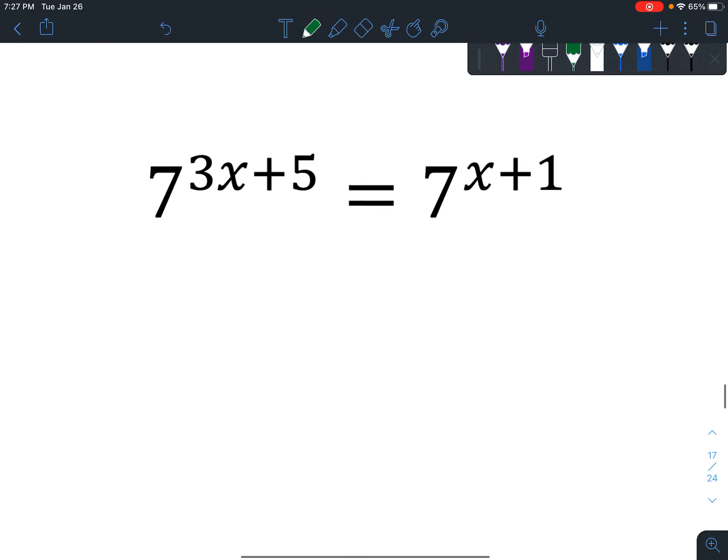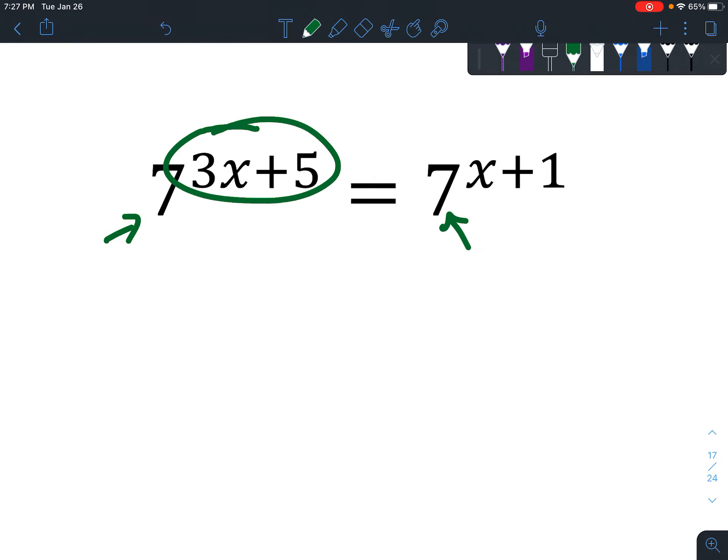Alright, one more example. Okay, so we've got 7^(3x+5) = 7^(x+1). Seems pretty complicated, right? But as soon as you see those bases are the same, go ahead and set those exponents equal to each other.